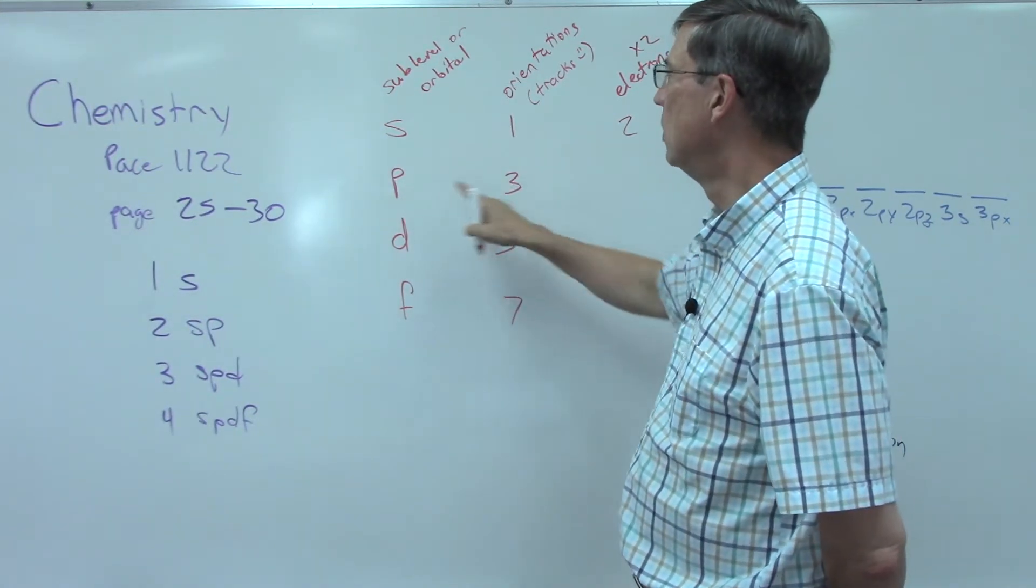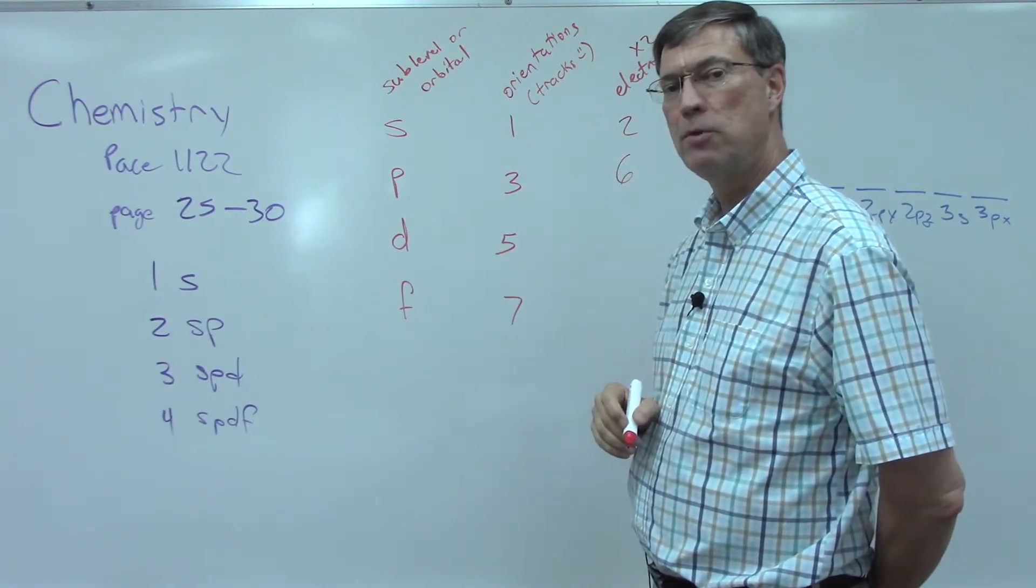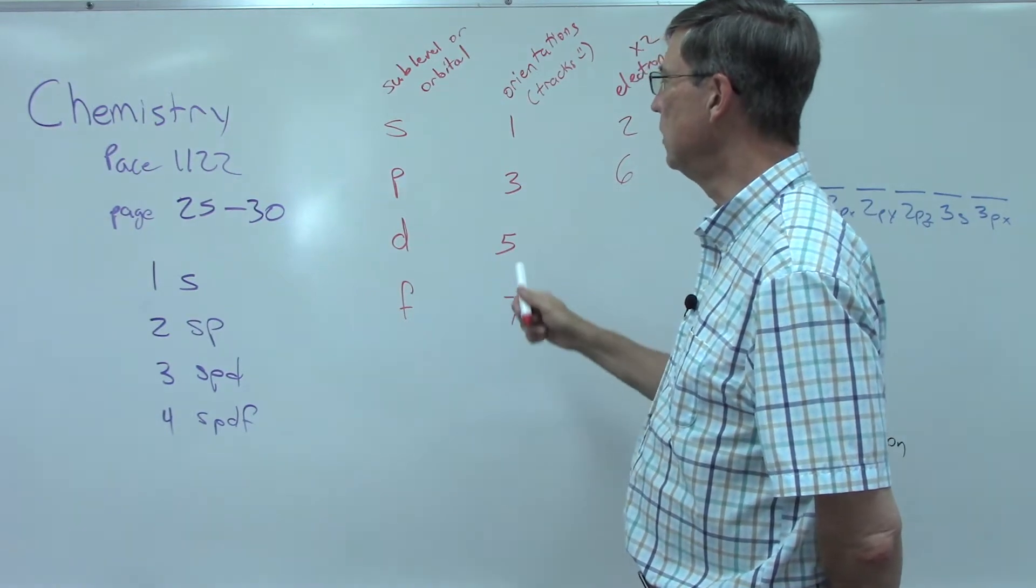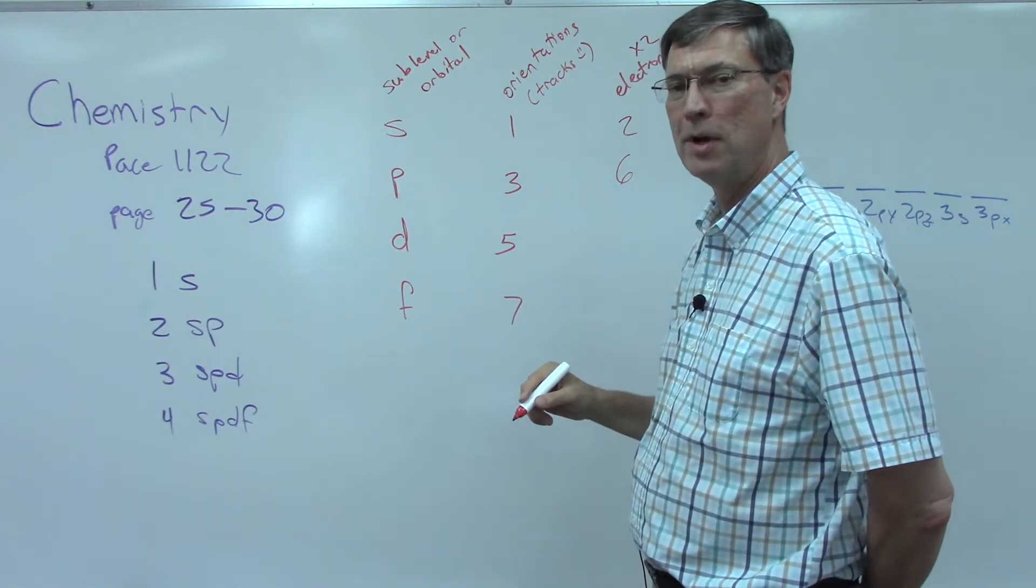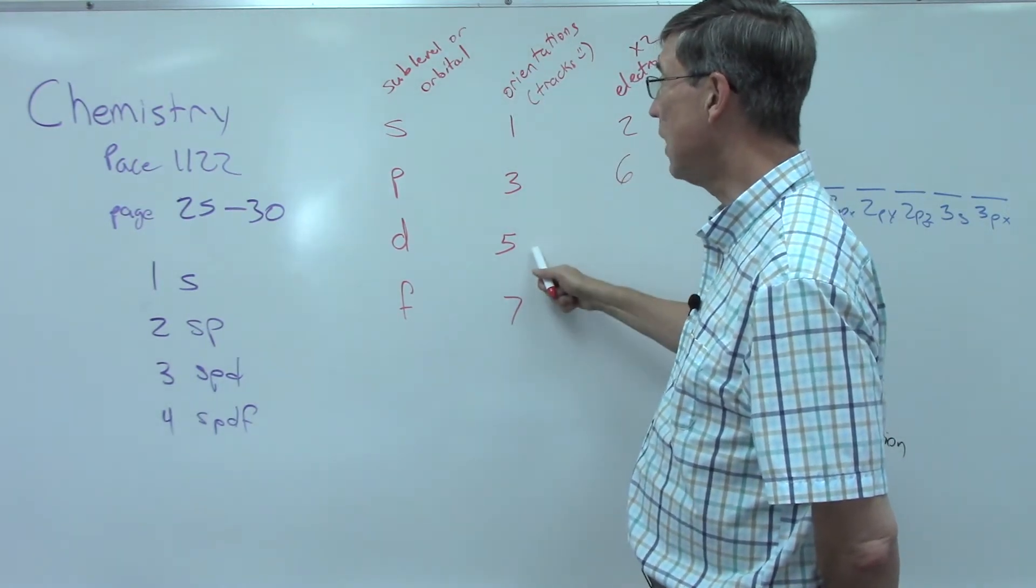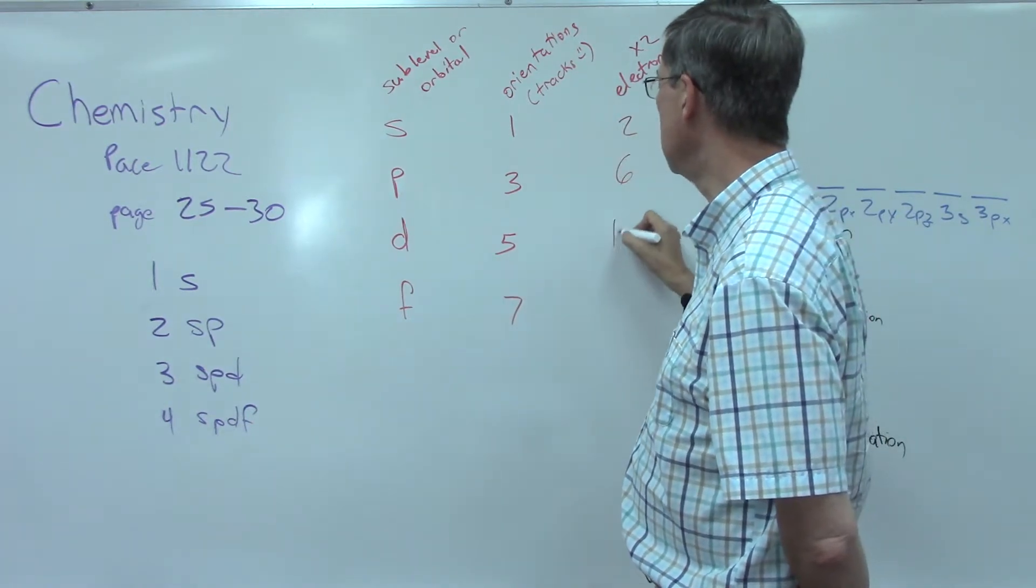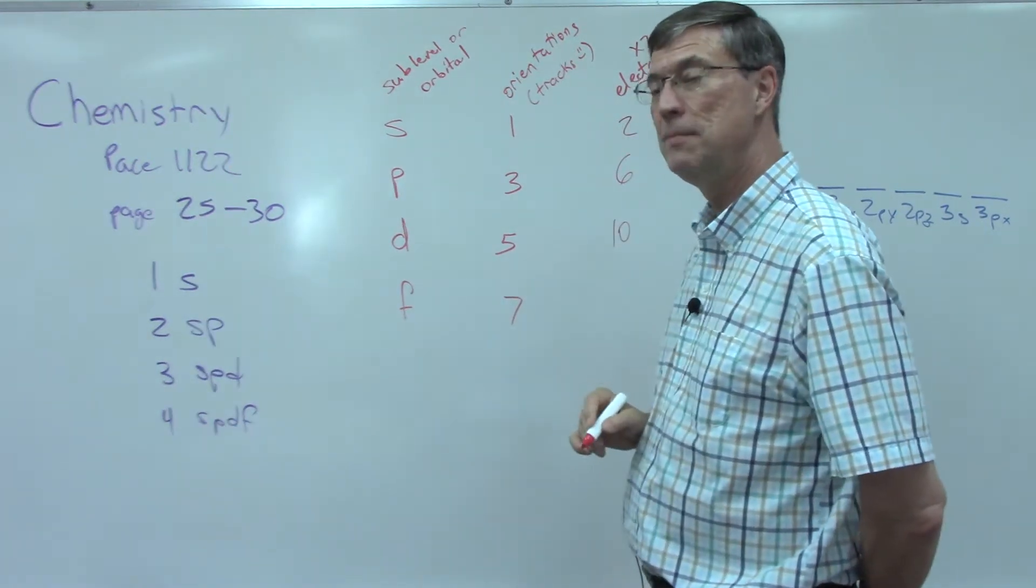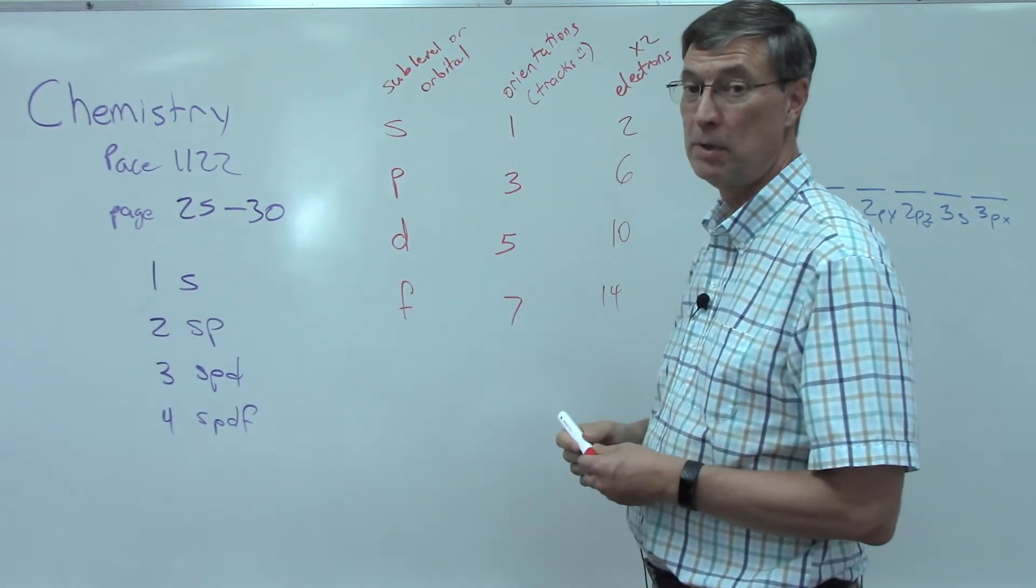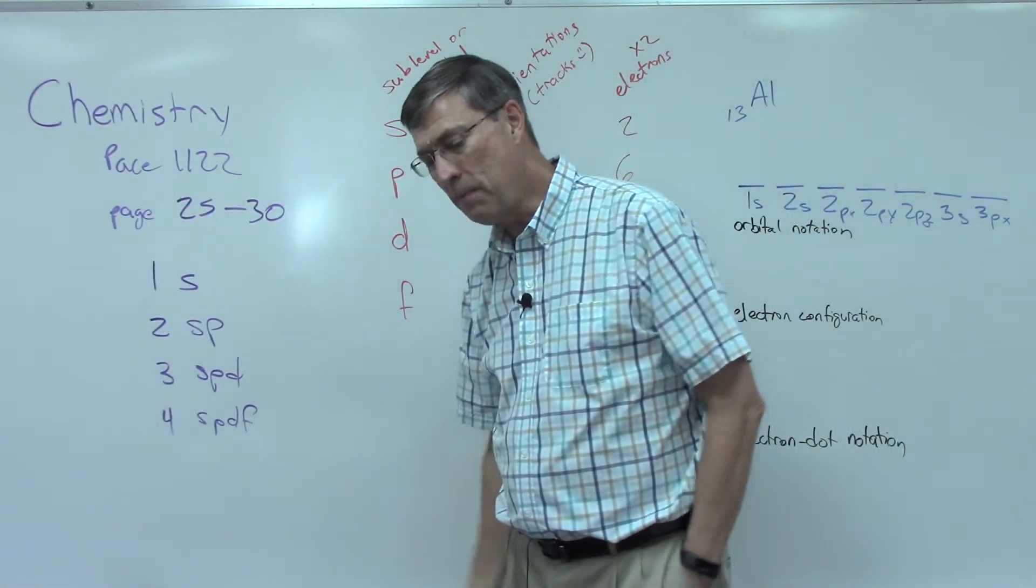So p, the p orbital or sub-level, those terms are interchangeable, can have three orientations. The pace calls it x, y, and z. Each of these can hold two electrons. So how many total electrons can we have on the p sub-level? Three times two is six. Now any book I've looked at and the paces especially make clear that once you get to d and f you can't visualize it anymore. We just have to know that there are five tracks, five orientations for electrons. So d is five times two, there's ten possible electrons in d. And then two times seven is fourteen. There are fourteen possible electrons in the f sub-level.